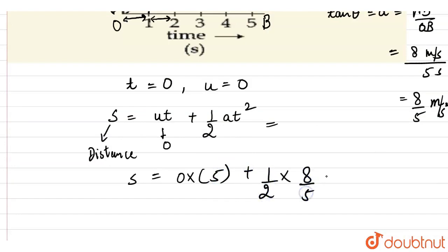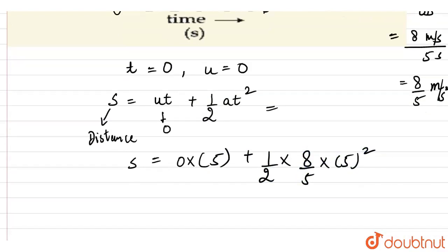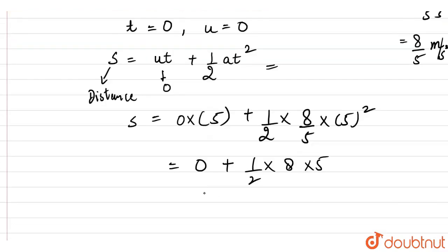This is 8 divided by 5 meter per second square into time square 5 square. So this comes out to be 0 plus half into 8 into 5. So our distance comes out to be 20 meter. So this is our final answer.